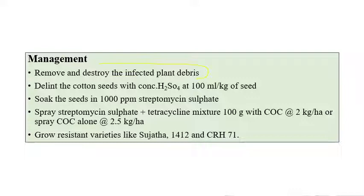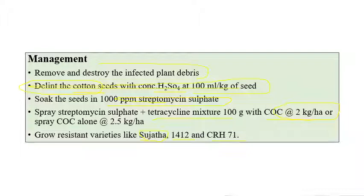Coming to management of Bacterial Blight: remove and destroy infected plant debris. Cotton seed delinting with concentrated sulfuric acid at 100 ml per kilogram of seeds is recommended. Soak seeds with 1000 ppm of streptomycin sulfate. Spraying streptomycin sulfate or tetracycline mixture at 100 grams with copper oxychloride at 2 kg per hectare is recommended, or copper oxychloride alone at 2.5 kg per hectare. Resistant varieties include Sujata, 1412, and CRH71.